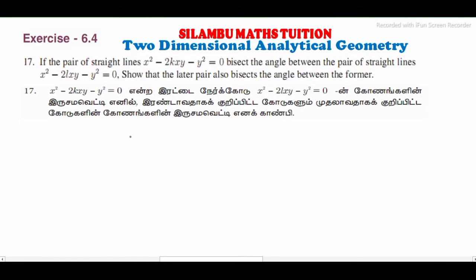Hi students, this is from 11th standard, question number 17. If the pair of straight lines x² - 2kxy - y² = 0 bisects the angle between the pair of straight lines x² - 2lxy - y² = 0, then show that the latter pair also bisects the angle between the former.